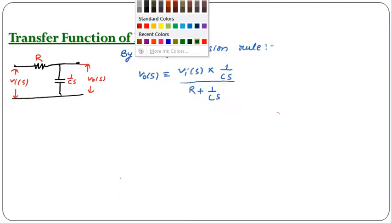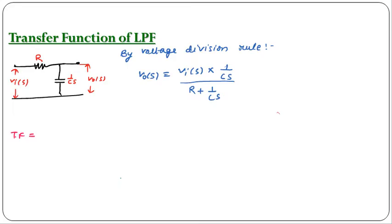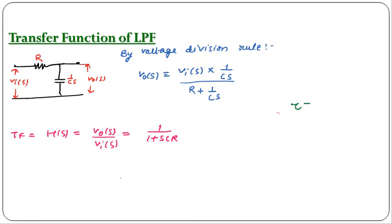The transfer function H(s) is defined as the Laplace transform of output divided by the Laplace transform of input, so it equals V0(s) divided by Vi(s). Simplifying, we get H(s) = 1 / (1 + sCR). Since RC is the time constant τ of the RC circuit, this can also be written as H(s) = 1 / (1 + τs).